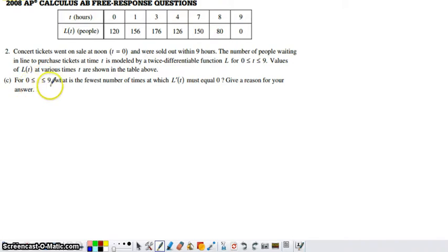In part C, it says between 0 and 9, what's the fewest number of times at which L'(t) has to equal 0? I want to start by thinking about what this means. L'(t) equaling 0 means the derivative of L equals 0.